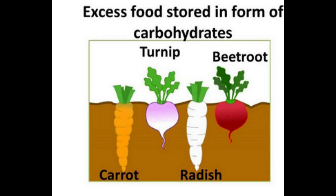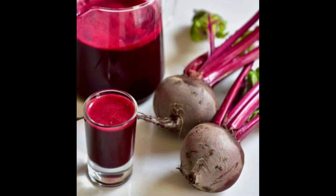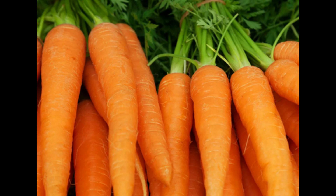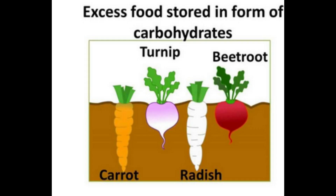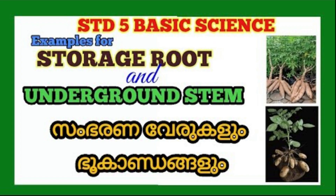These are called storage roots. Examples of storage roots are sweet potato, arrow root, beetroot, carrot, and radish. Storage roots are roots specially modified for the storage of food, starch, and water, and they usually grow underground. Other examples include tapioca and radish.